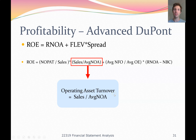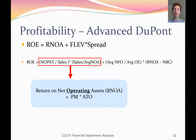We combine the profit margin and the asset turnover ratio together — these are both ratios capturing the operating activities of the firm. When we multiply the profit margin by the asset turnover ratio, we get the return on net operating assets, RNOA. Sometimes you'll also see this ratio referred to as OROA — operating return on assets. They both mean the same thing: whether I use RNOA or OROA, they both mean profit margin times asset turnover.